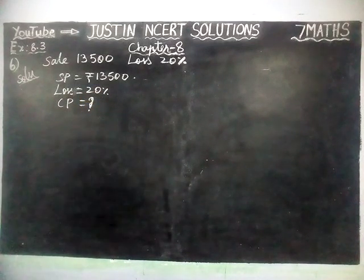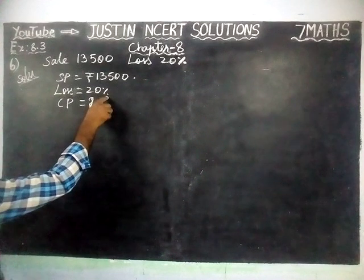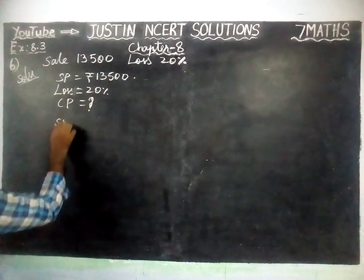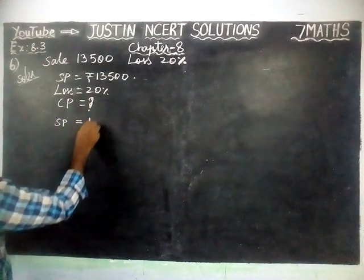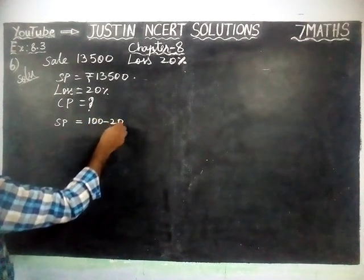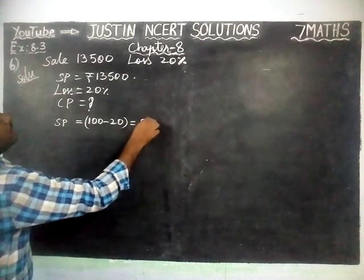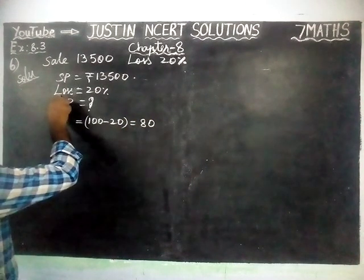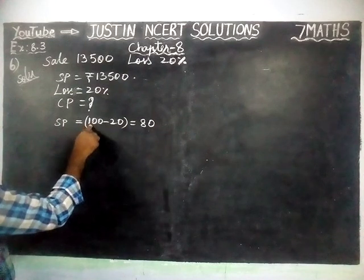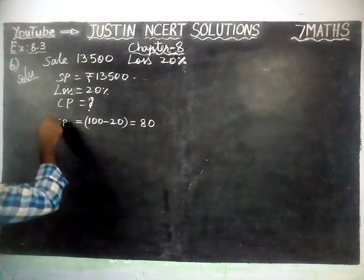To find: here loss percentage is equal to 20%. So, if the cost price is Rs. 100, then sale price equals 100 minus 20, which is equal to 80 for 20% loss. We are going to use this method.